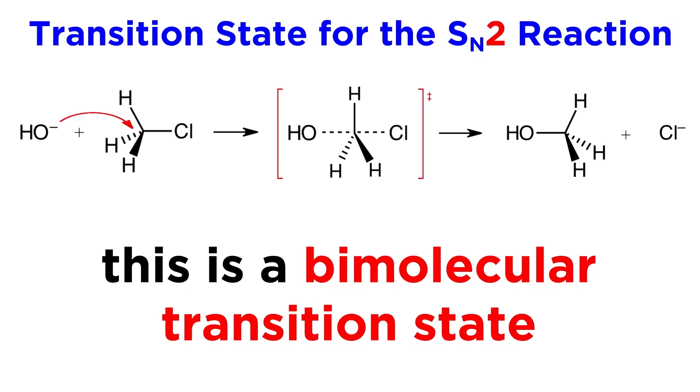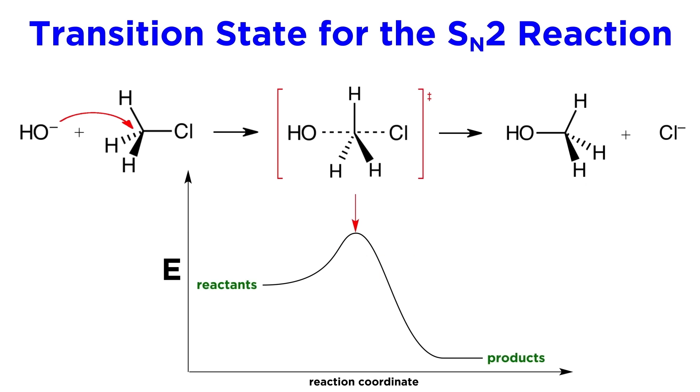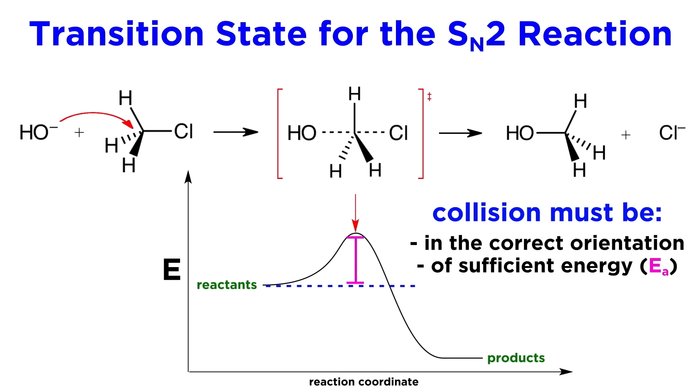The transition state is the highest point on an energy diagram. It is the highest energy conformation that must be achieved in order for a reaction to go to completion, which can only be achieved if the nucleophile and substrate collide in the correct orientation, and with enough kinetic energy so as to surpass the activation energy of the reaction.